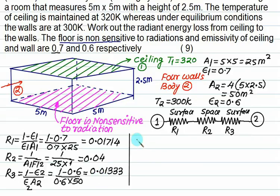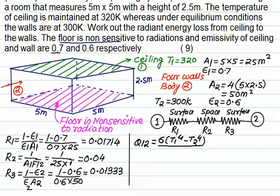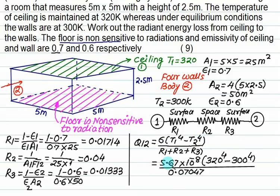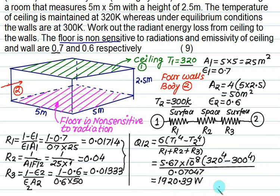Finally, Q12 = sigma × (T1^4 - T2^4) divided by the sum of all resistances. With sigma = 5.67 × 10^-8, T1 = 320 K, T2 = 300 K, and R1 + R2 + R3 = 0.07047, the radiation heat transfer from ceiling to walls equals 1920.39 W.